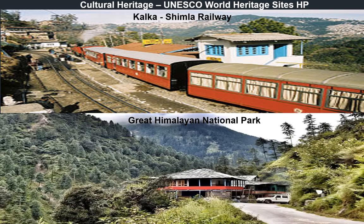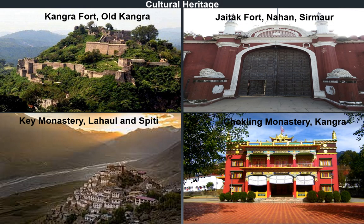Then is the cultural heritage of Himachal Pradesh. First we will discuss the UNESCO sites. The first is Kalka-Shimla Railway, which was built in 1898 and declared a UNESCO site in 2008. Then is the Great Himalayan National Park, built in 1984 and declared a UNESCO site in 2014. Other monuments include Kangra Fort located in Old Kangra, built in the 4th century BC. Then Jaitak Fort located in Nahan, Sirmour district, built in 1810. Ki Monastery located in Lahaul Spiti, built in the 11th century, and Chokling Monastery from Kangra, built in the 18th century.